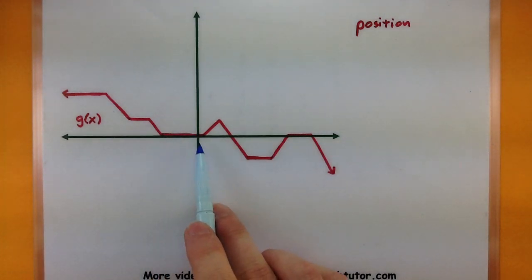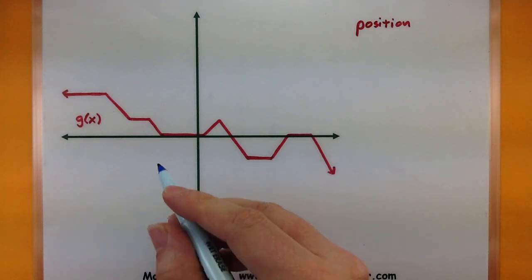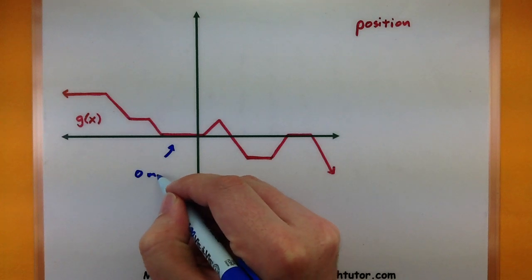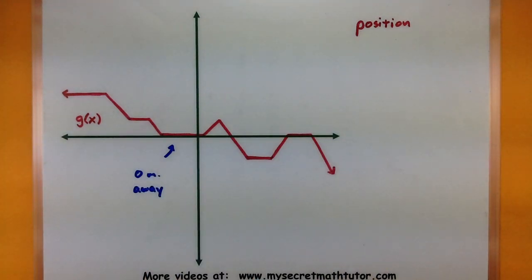Anytime we see our position right at zero, this is telling us we're at our starting point, zero meters away. Of course this could be in feet, could be in anything, but we're at our starting point.